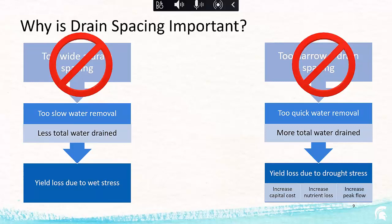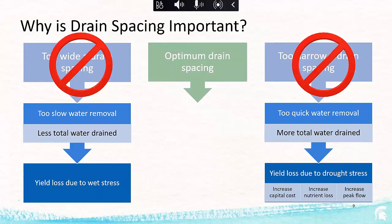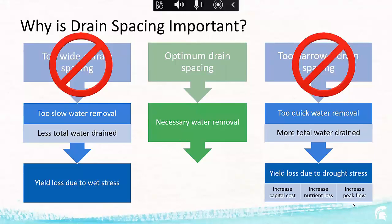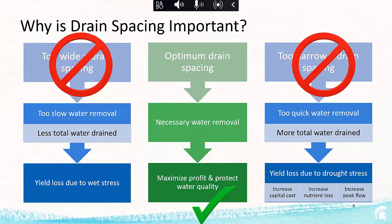If you have something in between — based on local soil and weather conditions of that specific field — you get the optimum drain spacing. That's going to result in the necessary water removal, maximum annual return on investment, and it helps protect water quality by avoiding those extremes based on a guess. You want to be at the optimum: not too narrow, not too wide.